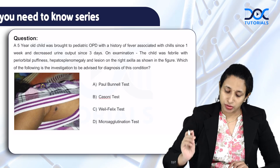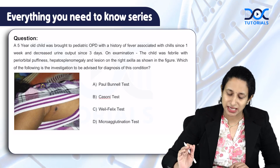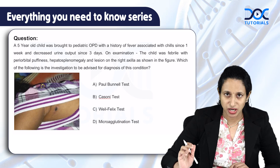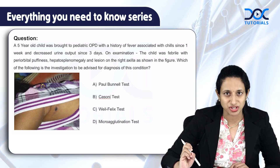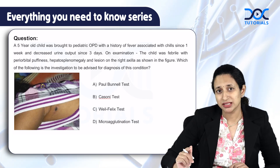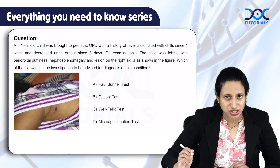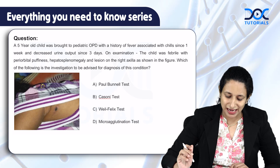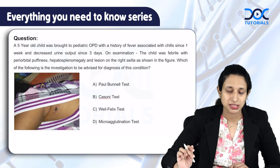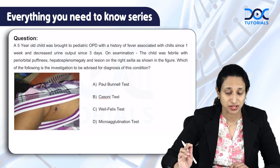Now we are going to discuss a clinical scenario. This is also going to give you an idea about one important condition to remember, which is considered the most common rickettsial infection seen in India. The clinical scenario is about a five-year-old child brought to the pediatric OPD with a history of fever with chills since one week. There are complaints of decreased urine output since three days. On examination, the child was found to be febrile with periorbital puffiness, hepatosplenomegaly, and a lesion on the right axilla.